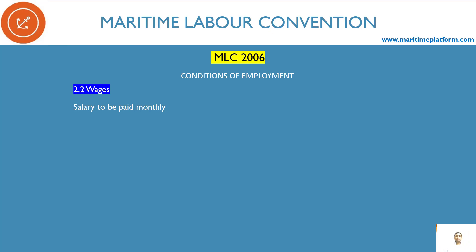Wages is basically the salary — what you are going to get paid monthly. There are offshore vessels mostly where the salary is mentioned in the contract per day, not per month. They give a lump sum of so many US dollars or Indian rupees per day. What the MLC says is that salary should be paid monthly — meaning the maximum interval between payments can be monthly. It can be weekly, bimonthly, or fortnightly, but not once every two months. That is not acceptable as per MLC.